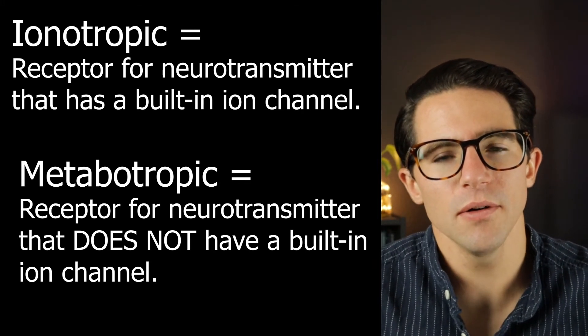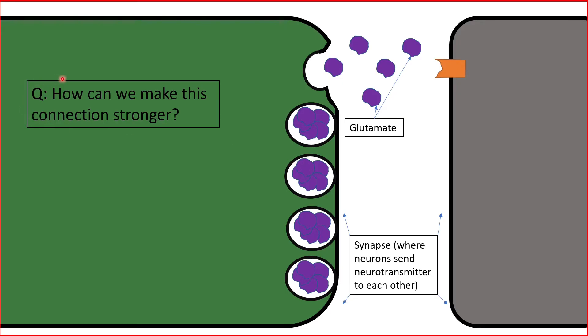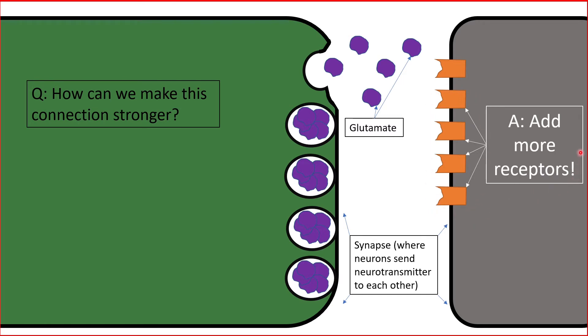Now we basically know enough to talk about plasticity. To make the connection between two cells stronger, we have to do something. One way to do that is to add more receptors to the postsynaptic cell. If you think about that, it would make that cell more sensitive to the glutamate that the presynaptic cell is sending. There would be the same amount of glutamate, but there are just more receptors to actually pick it up and cause that other cell to perhaps undergo an action potential.